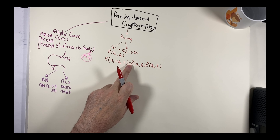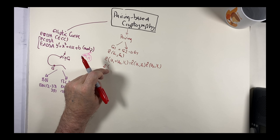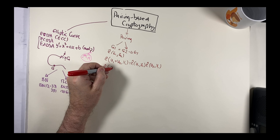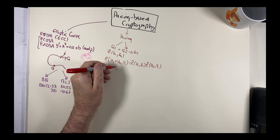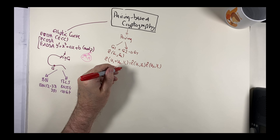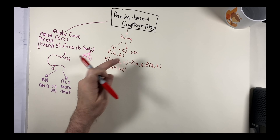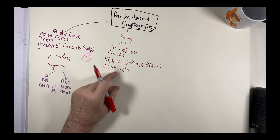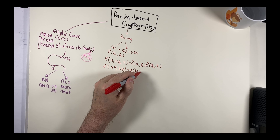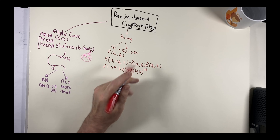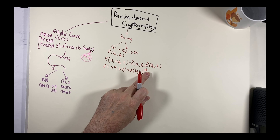Similarly, if we took V1 plus V2, the result splits analogously. Another bilinearity rule is that the pairing of a scalar 'a' times a point U with scalar 'b' times a point V equals the pairing of U and V raised to the power of a·b — the scalars a and b can be pulled out as exponents.